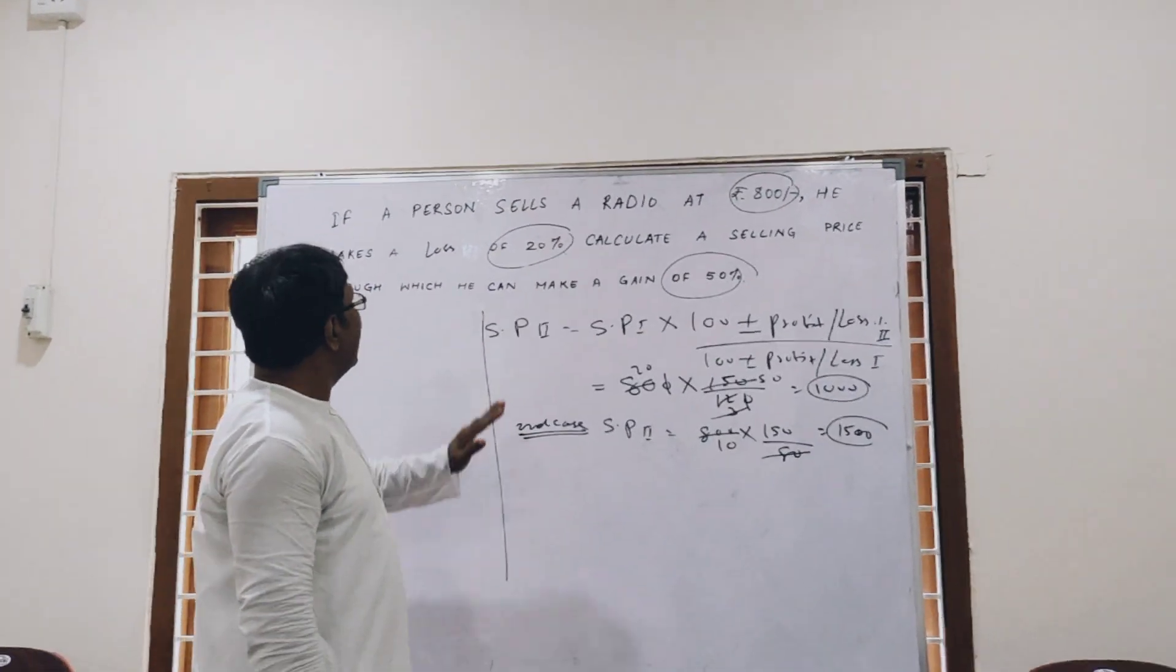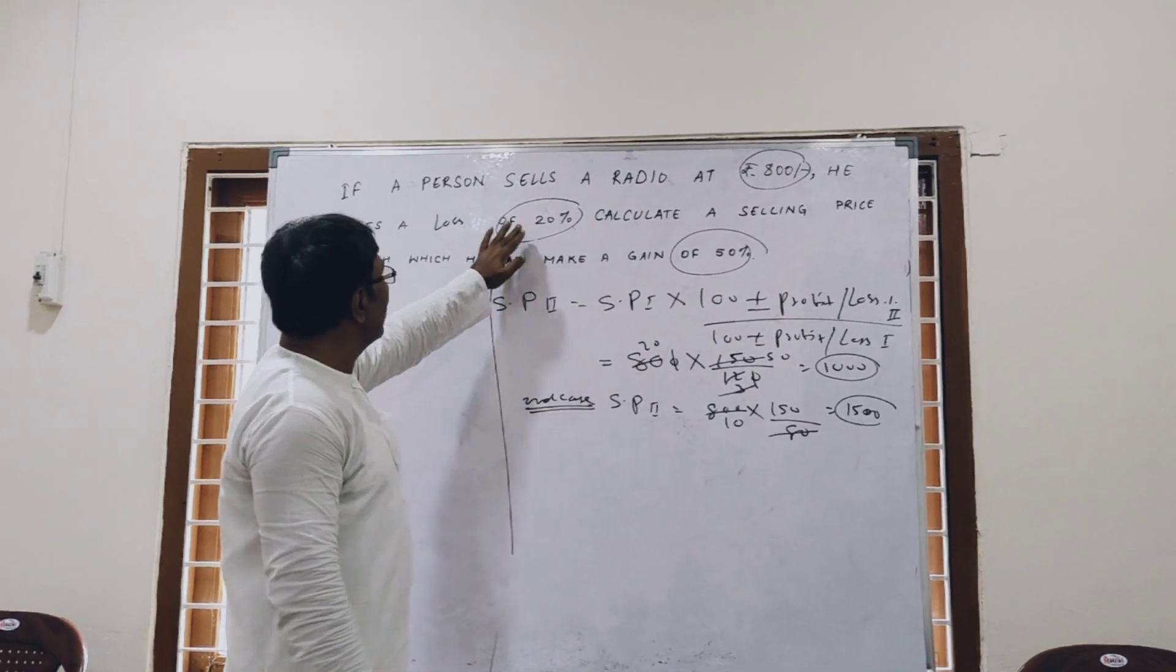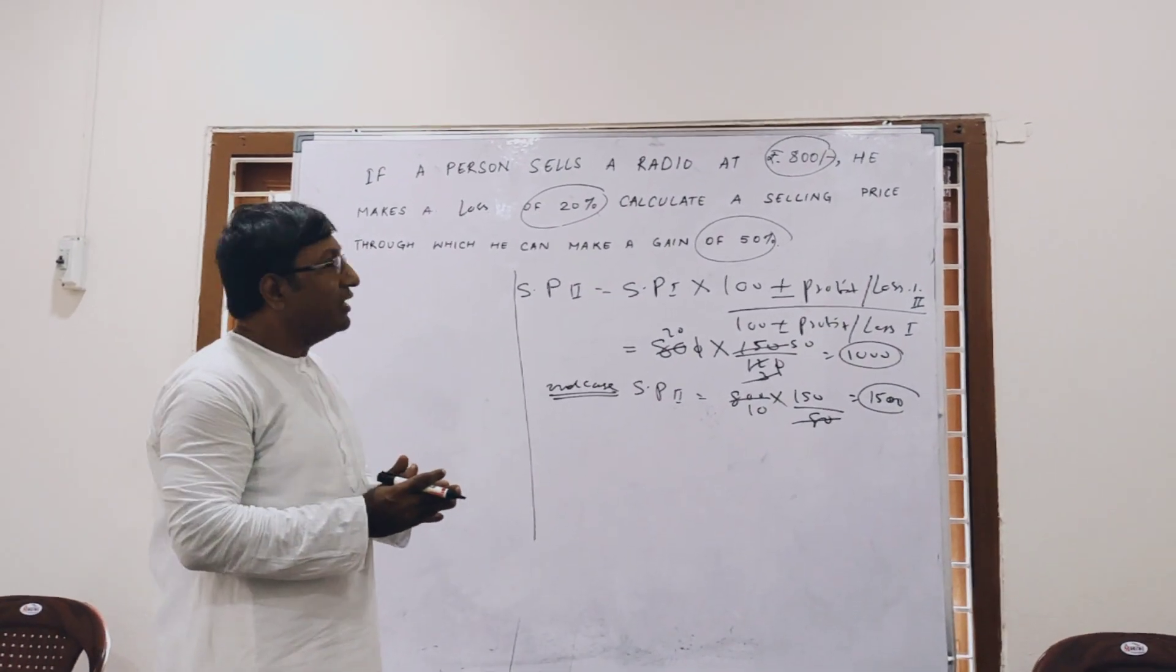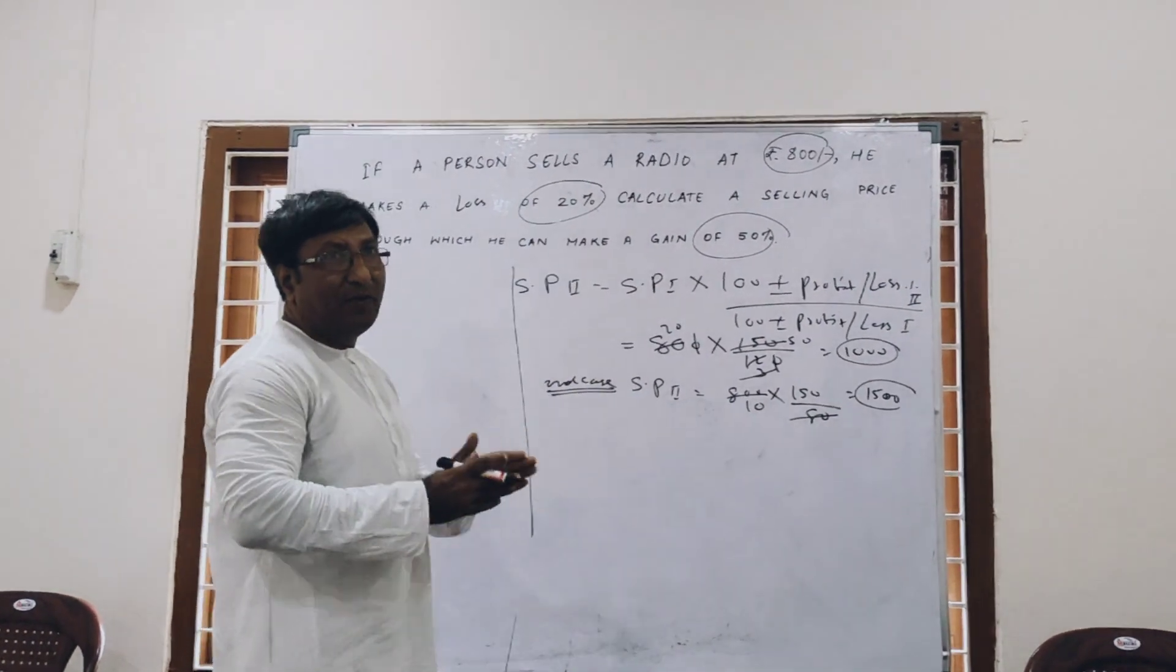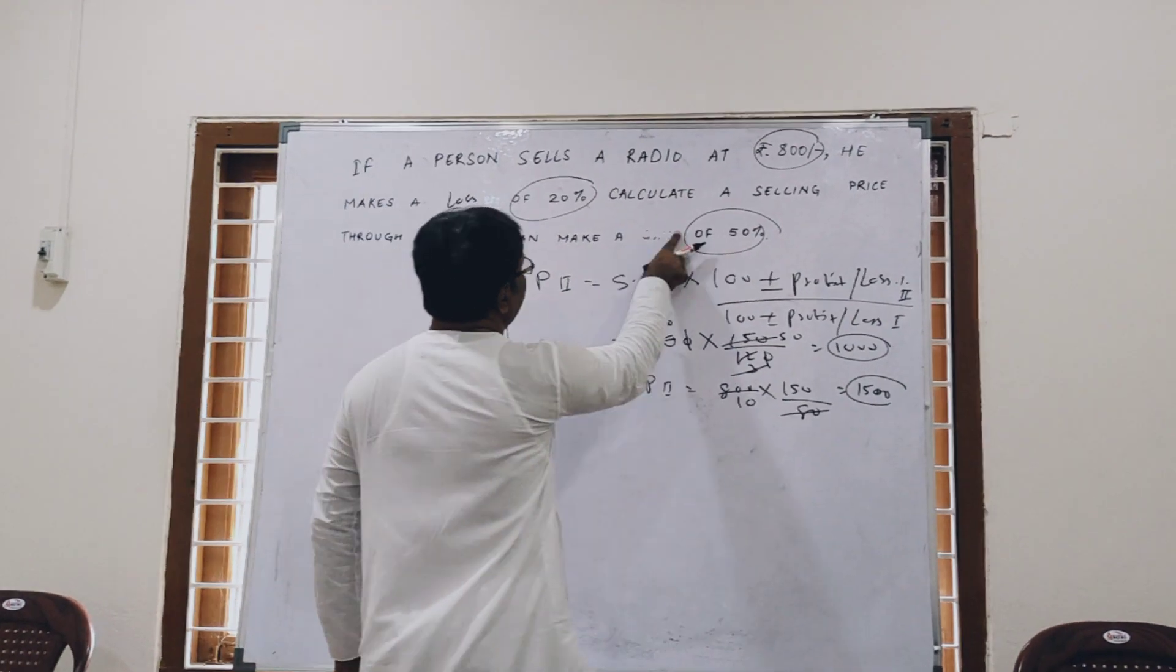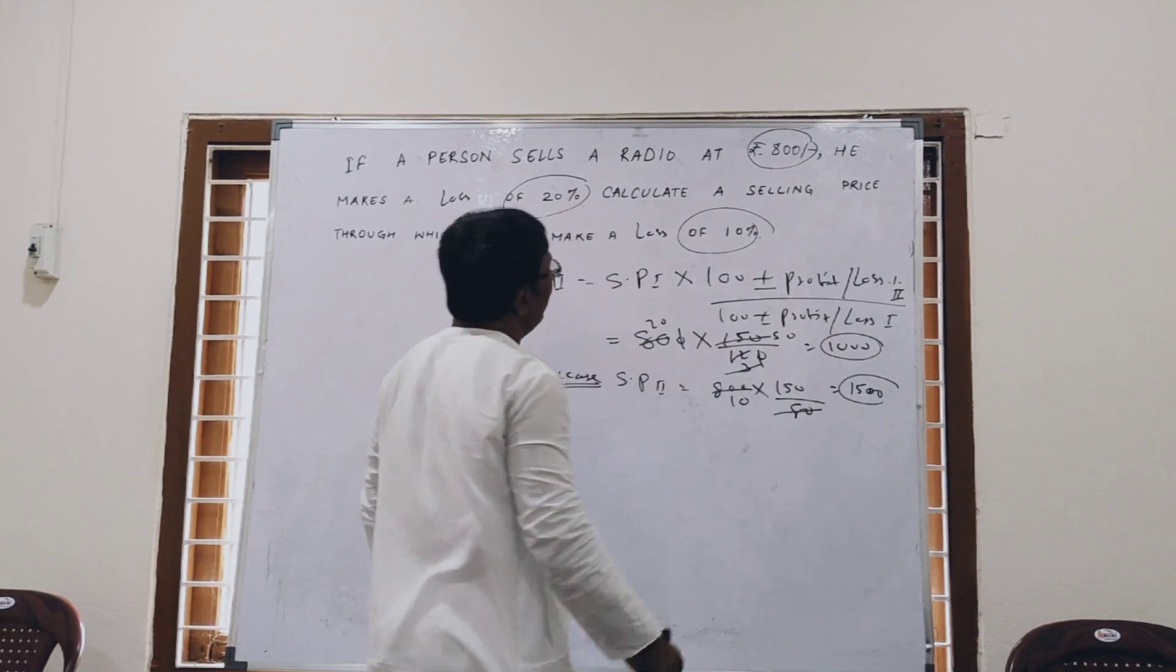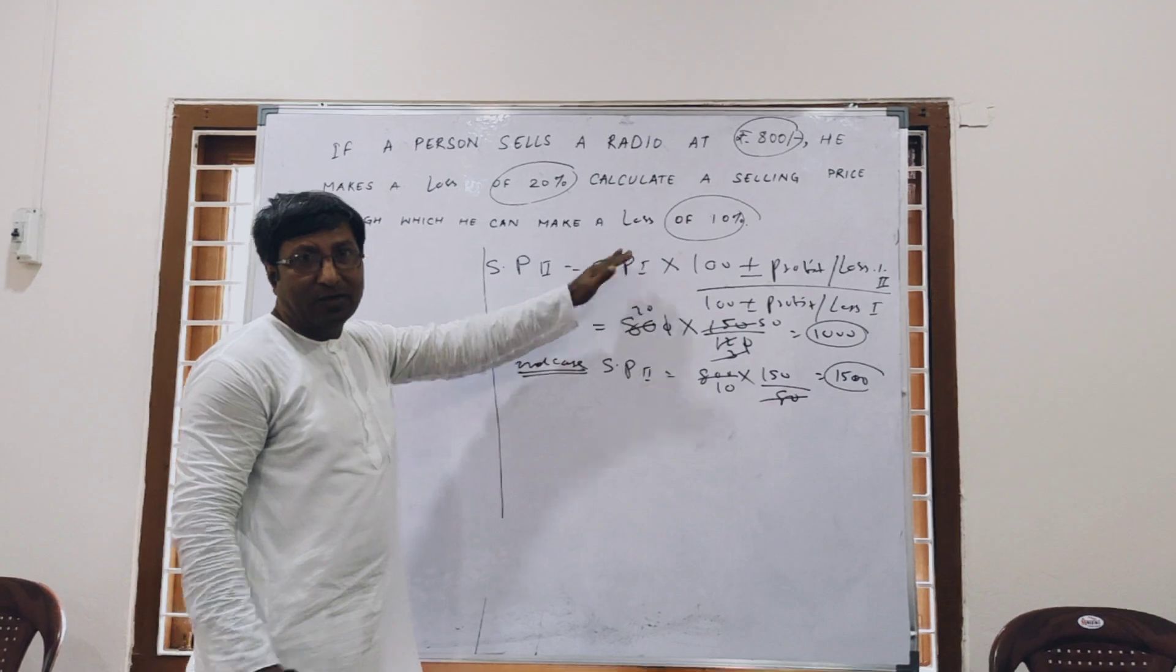In the same way suppose there is a loss of 20% and he wants to reduce the loss to 10%. Any person doesn't want loss, so if he is making a loss of 20% he will want to minimize the loss. Suppose there is a loss of 10%. In this case this is loss and that is loss.